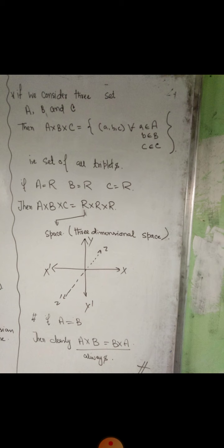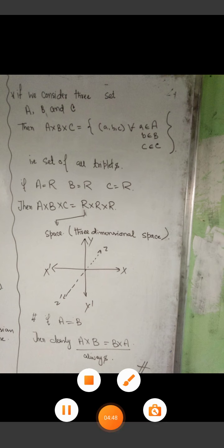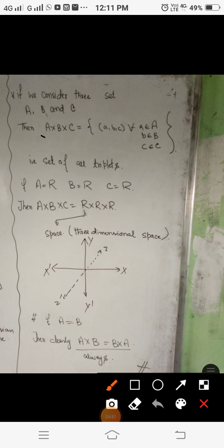If we have three sets A, B, and C, then their Cartesian product is simply the set of all ordered triples — A cross B cross C = {(a, b, c)} where a ∈ A, b ∈ B, and c ∈ C. So the Cartesian product of three sets is the set of all ordered triples. If A = ℝ, B = ℝ, and C = ℝ, then the Cartesian product is ℝ cross ℝ cross ℝ.